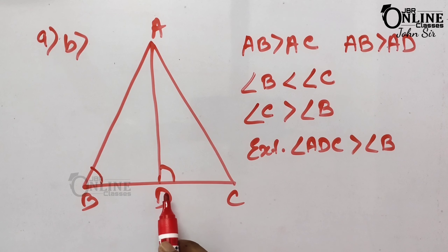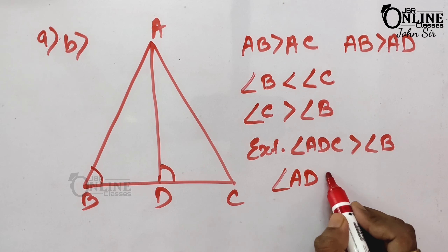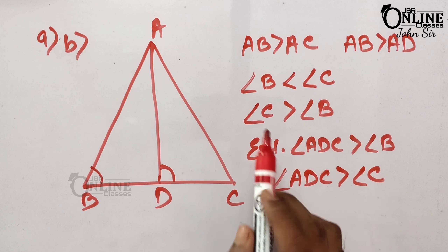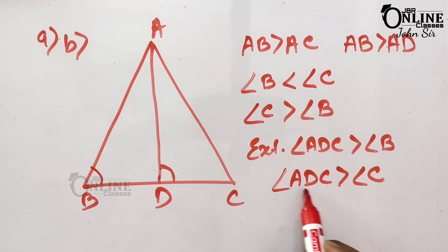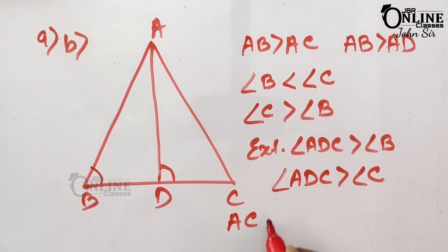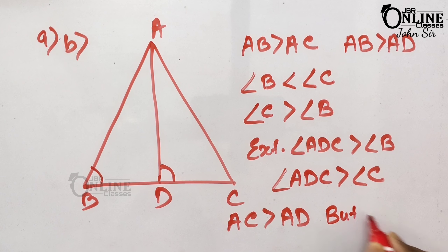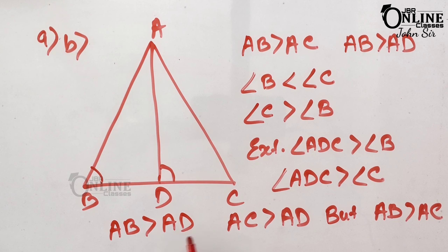In triangle ABD, the exterior angle ADC is greater than angle B. Also, angle ADC > angle C because angle C > angle B. Therefore, in triangle ACD, AC > AD. But since AB > AC, combining gives AB > AD. It is proved.